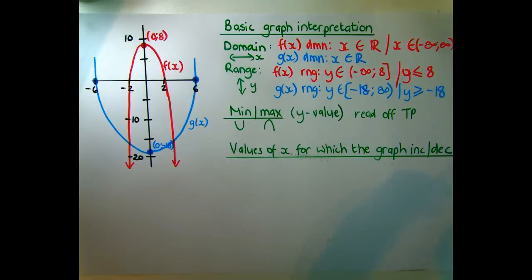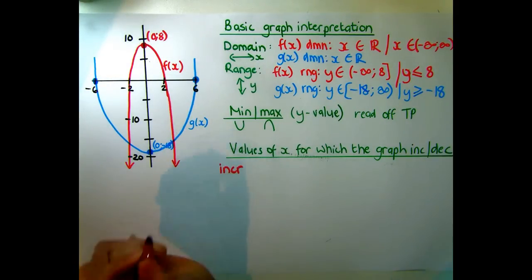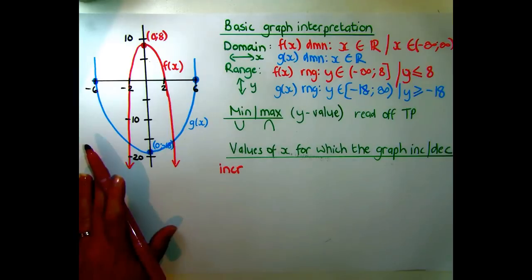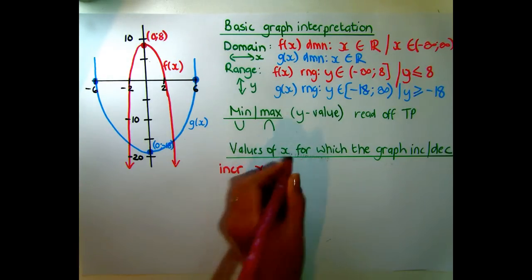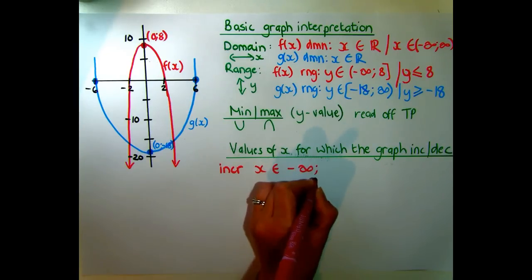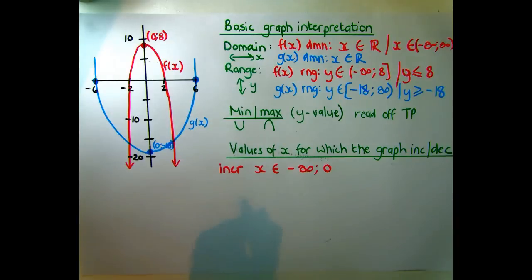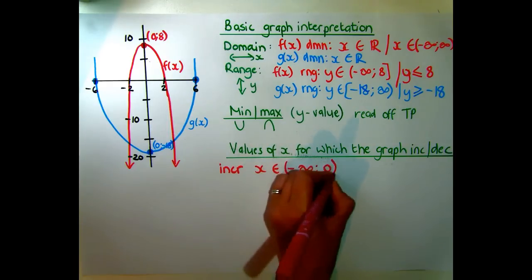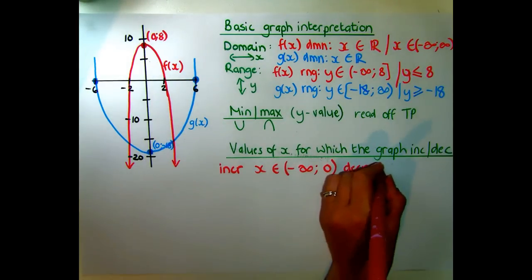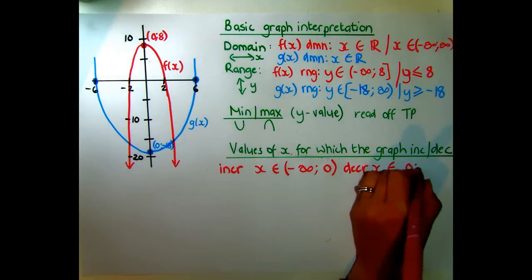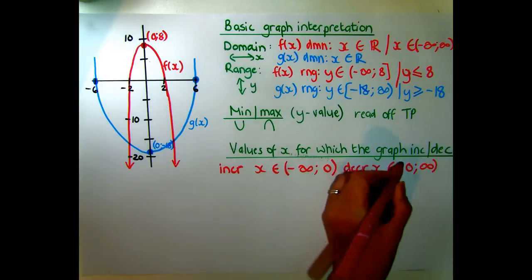For the red graph, it is increasing when x ∈ (-∞, 0) — from negative infinity up to x = 0. At x = 0 it is neither increasing nor decreasing; that's called a stationary point, so we exclude it with an open bracket. It is then decreasing when x ∈ (0, +∞) — from that point to positive infinity, again excluding the endpoints.